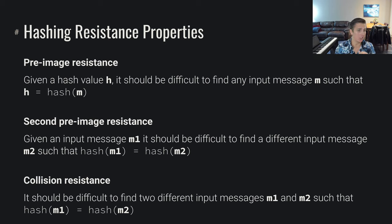The next property is called second pre-image resistance. And what that means is that given an input message m1, it should be difficult to find a different input message m2 such that hash of m1 equals hash of m2. So given some message, I don't want you to be able to find another message that shares the hash. Not just given a hash finding the original message as is done with pre-image resistance. Even given the message, you shouldn't be able to find another message where the hashes are colliding.